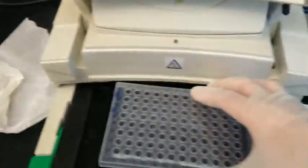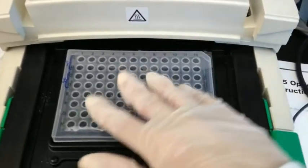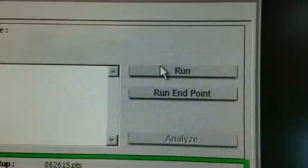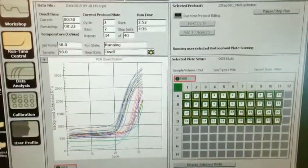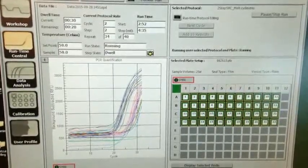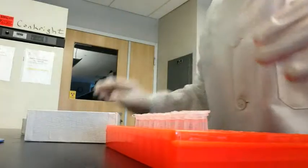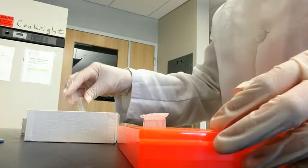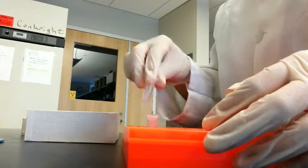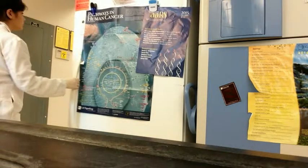Once the plate is loaded, begin the run. The amplification process takes approximately 3 hours to complete and can be monitored in real time. At the end of the process, save the data. Turn off the machine when you're finished. Store both the well plate and the samples at minus 20 degrees until the next day.